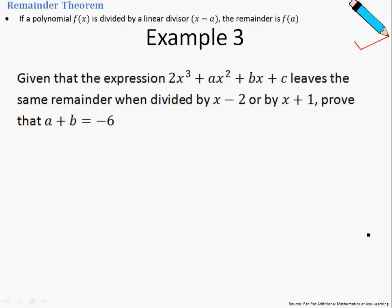Now, let's move on to example number 3. Given that the expression 2x³+ax²+bx+c leaves the same remainder when divided by x-2 or by x+1, prove that a+b=-6.